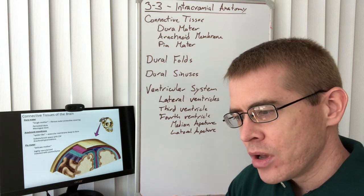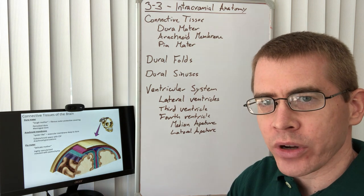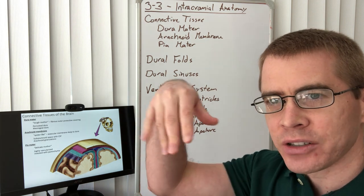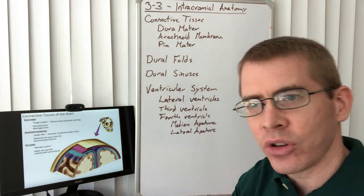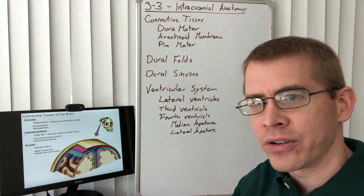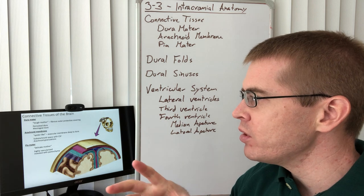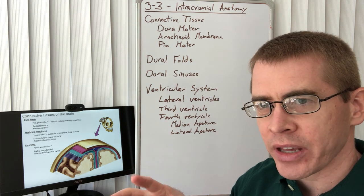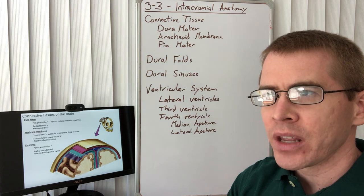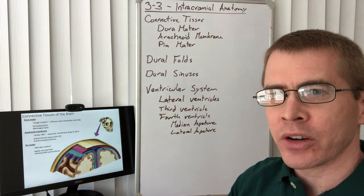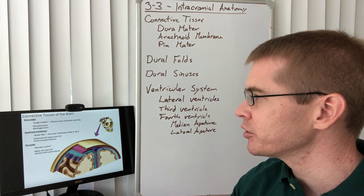Just below the dura mater we have the arachnoid membrane, so named because it has little fibery extensions that look like a spider's web. Below the arachnoid membrane is the subarachnoid space, which is the space where cerebrospinal fluid flows. This is also an important structure.